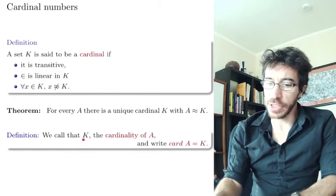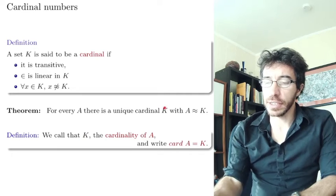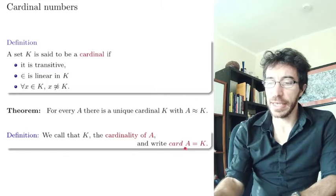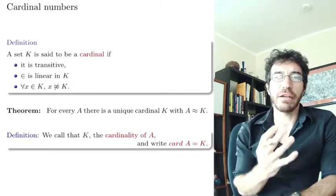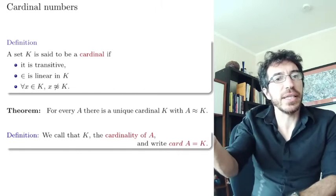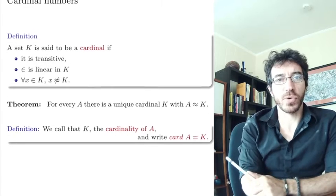So we call this K the cardinality of A. So this unique K that is equinumerous to A is the cardinality of A. We write card A equals K. So now we have a representative. When we talk about the cardinality of somebody, it's going to be these objects, whatever the object is.